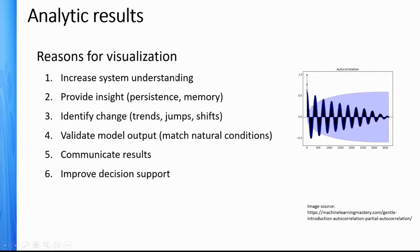Why even do this? It increases our understanding of the system and provides insight into persistence and system memory. We can find changes, jumps, shifts, trends, and alterations. It's a way to validate model output if you're trying to model a natural system. We can communicate results — sometimes a well-conceived graph helps people understand with a picture rather than a table of numbers. And hopefully, if there are decisions to be made, this can improve the decision maker's ability to figure out what's going on as decision support.